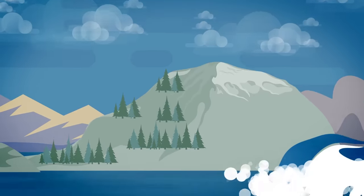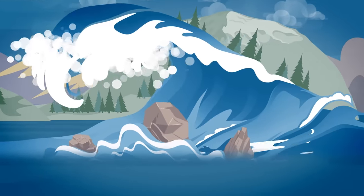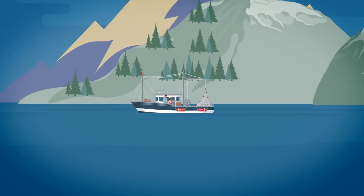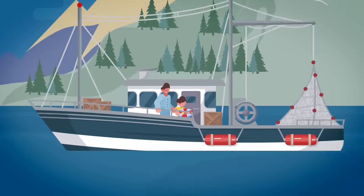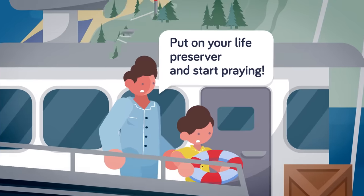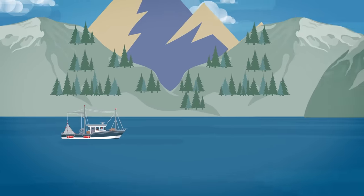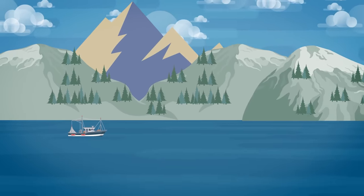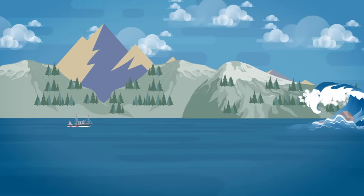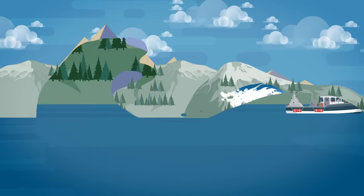Howard now knew that this was no time for standing around and admiring the power of nature. There was no way this wave was going to stop before it hit their small boat. Howard told Sonny to put on his life preserver and start praying to God Almighty. There was not much he could do to steer the boat out of the way since it was anchored, but he managed to turn on the engine and steer the boat so it was facing the oncoming wave. Had he not done that, the two might not have survived.